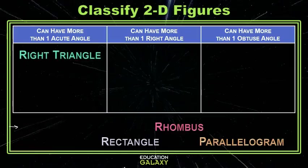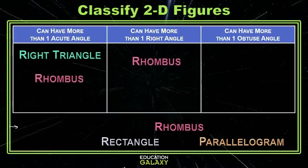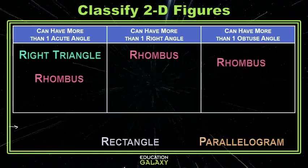A rhombus. Rhombus is fun because it can have two acute and two obtuse angles. But it can also be a square, which means it can have four right angles. So a rhombus does have either more than one acute, more than one right, and or more than one obtuse. It has many homes.